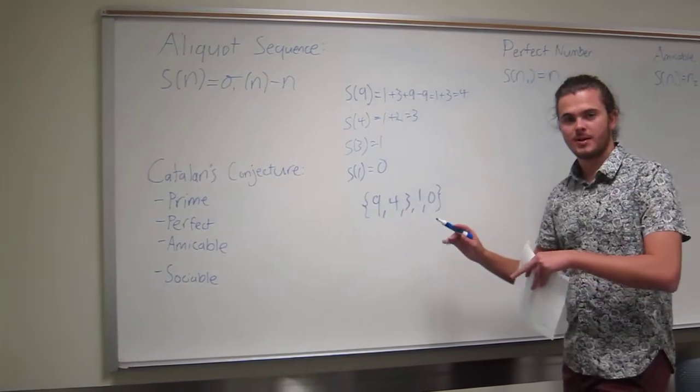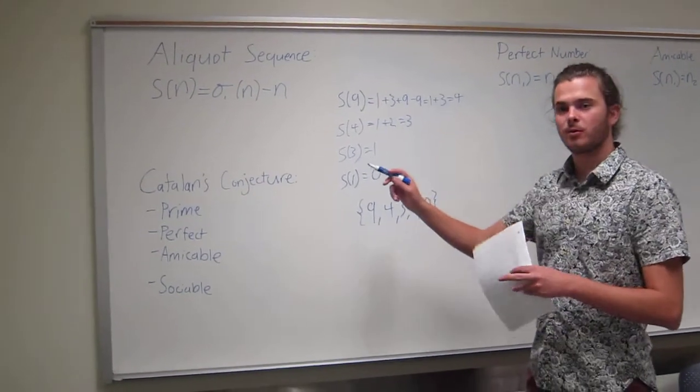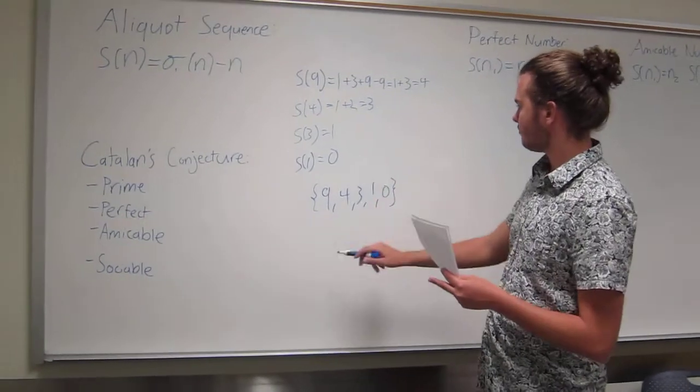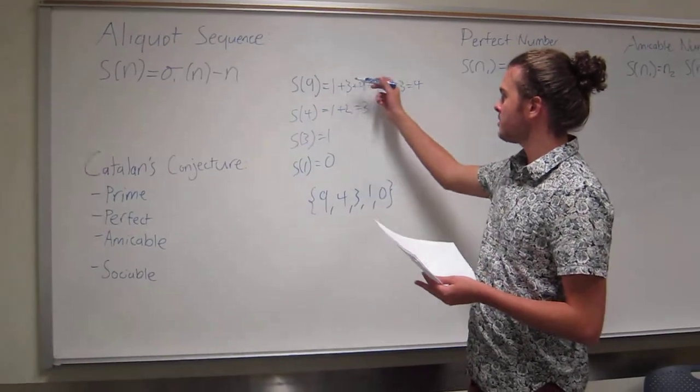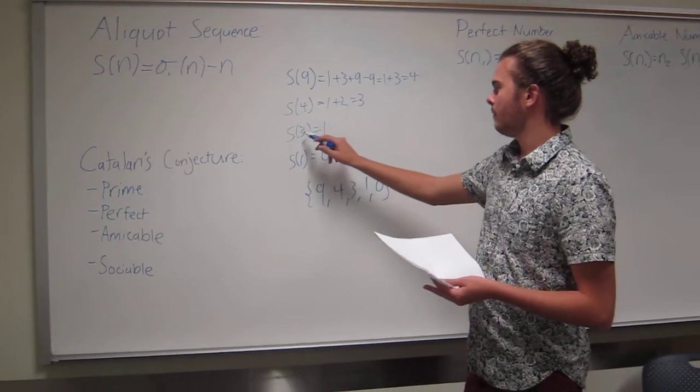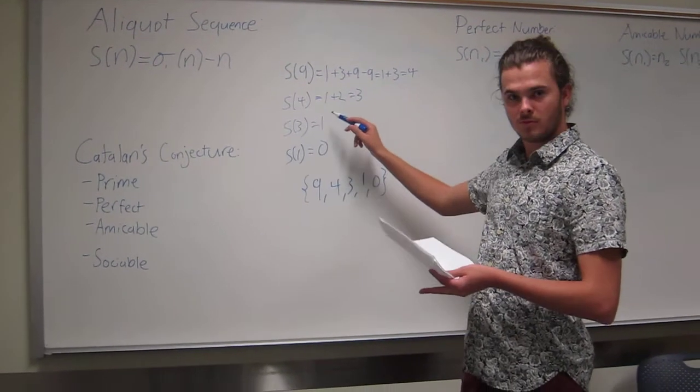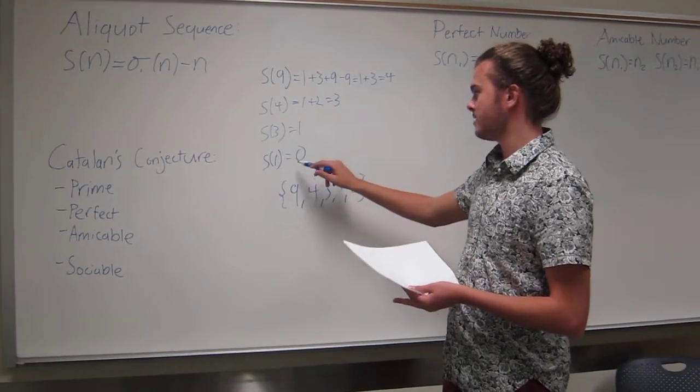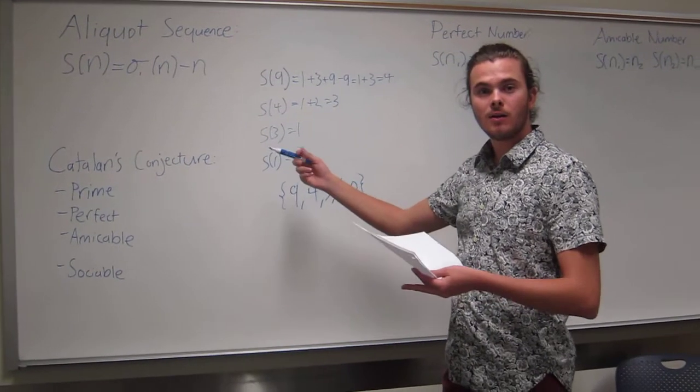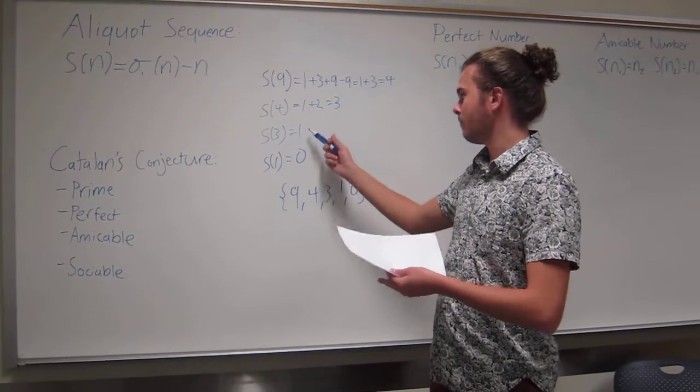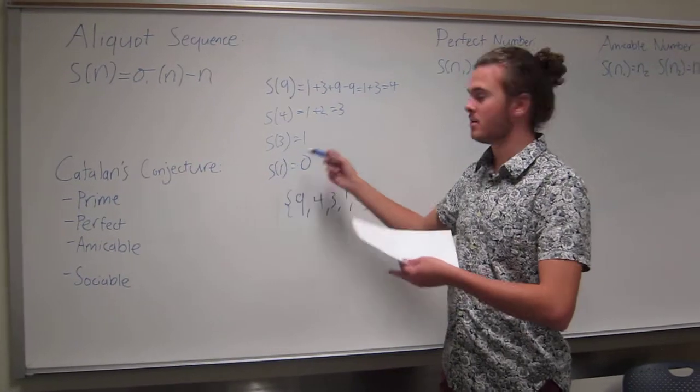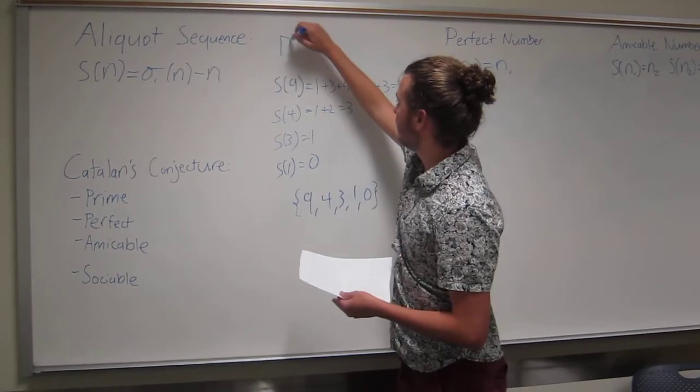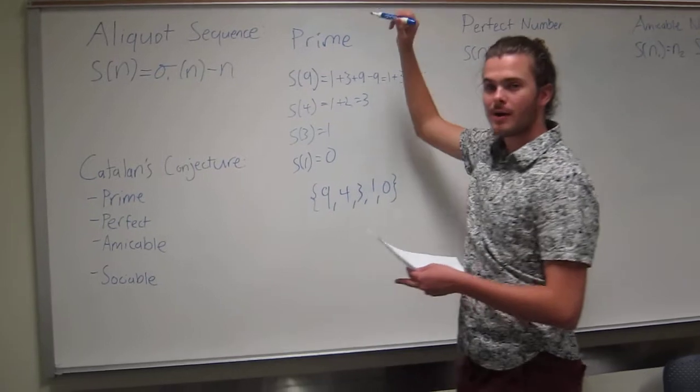Let me get back to the example I just said. I actually just provided an example where the sequence ended with a prime number, 3. Once the sequence gets down to a prime number, the next number in the sequence is going to be 1 and the next one's going to be 0, because the only other number that divides a prime number is 1, and the sum of the proper divisors of 1 is 0. So this was actually an example where an aliquot sequence ends in a prime.